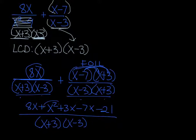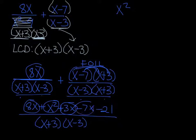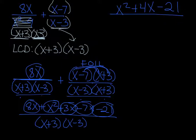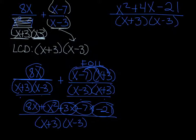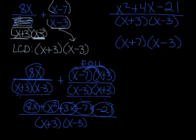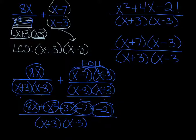On the top we want to combine like terms. We've got x squared. Then 8x and 3x makes 11x, and 11x minus 7x is 4x. So x squared plus 4x. And then minus 21, over the denominator (x plus 3)(x minus 3). This numerator is a quadratic and it looks factorable. Are there factors of negative 21 that add to 4? Yes — positive 7 and negative 3, because 7 minus 3 is 4 and 7 times negative 3 is negative 21. So we get (x plus 7)(x minus 3) over (x plus 3)(x minus 3). The x minus 3's cancel out, so our final answer is x plus 7 over x plus 3.